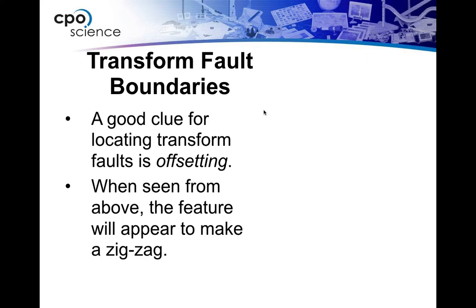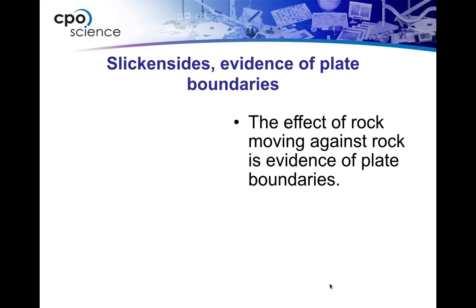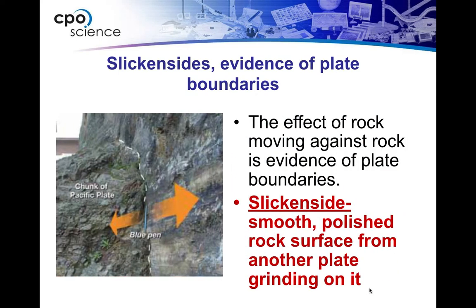At transform fault boundaries, plates slide past each other. You're going to get certain features when this happens. One is called offsetting — it looks like something was lined up before and now it's not, like a creek that's split in the picture. Another feature is called the slicken side — the side is so smooth on the rock surface because the plate has been sliding along it, grinding and polishing it, making it look slick. It's a smooth, polished surface from another plate grinding or moving on it.